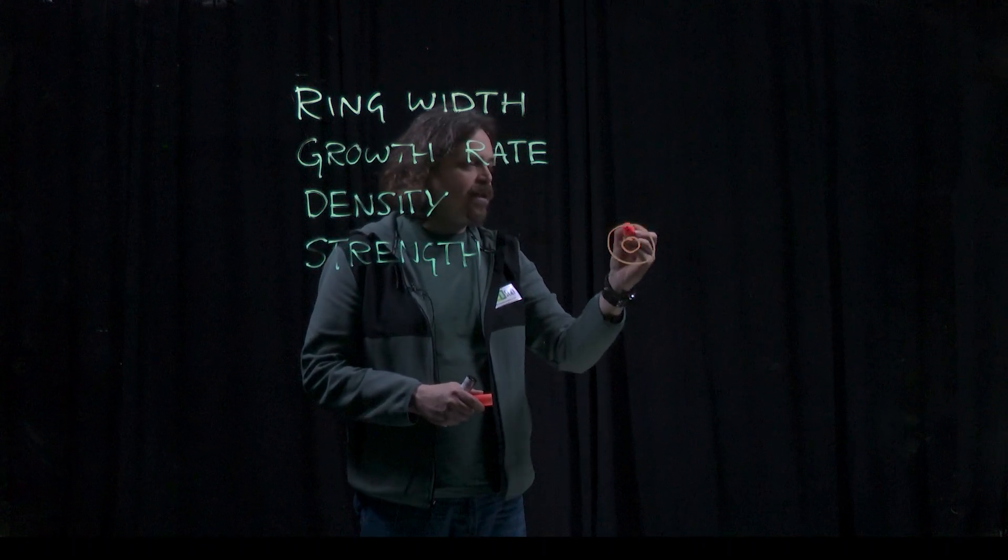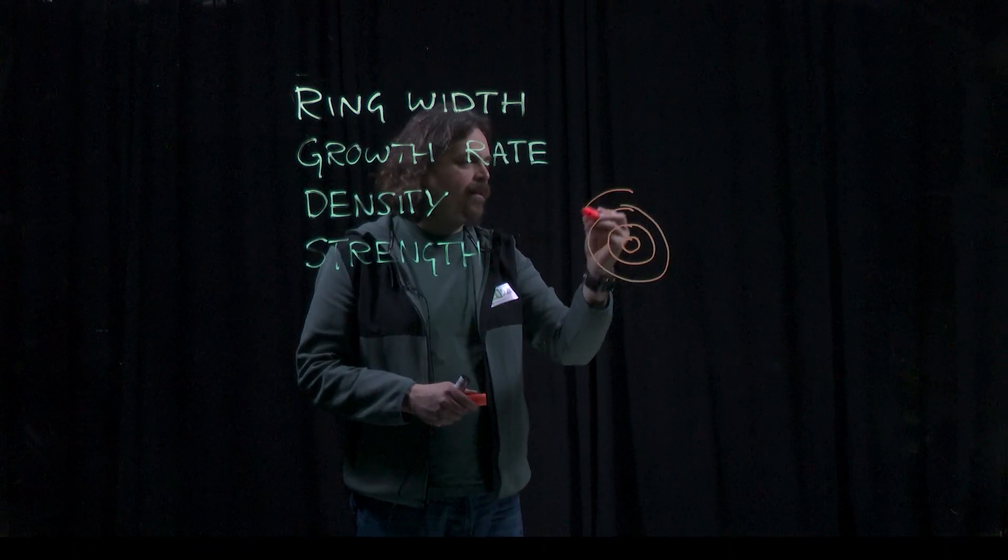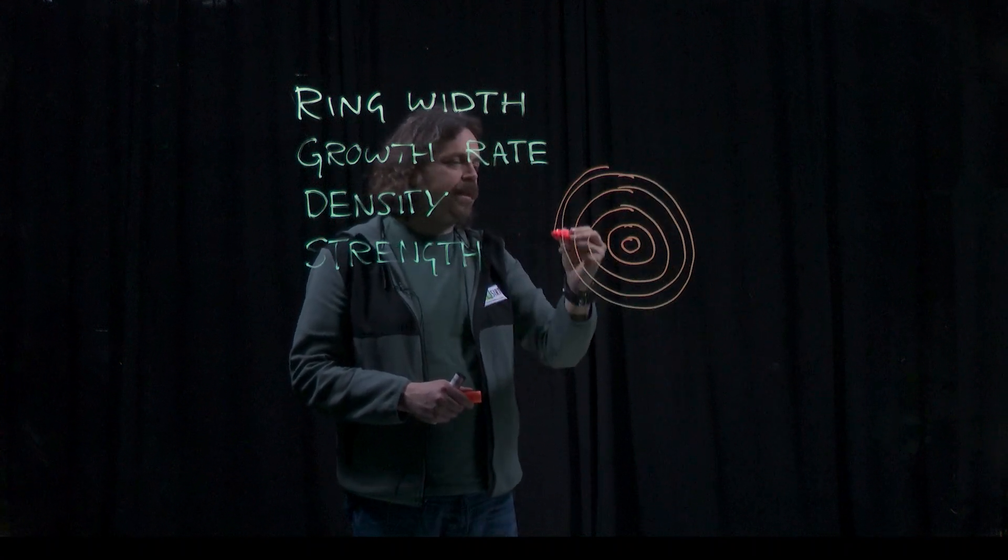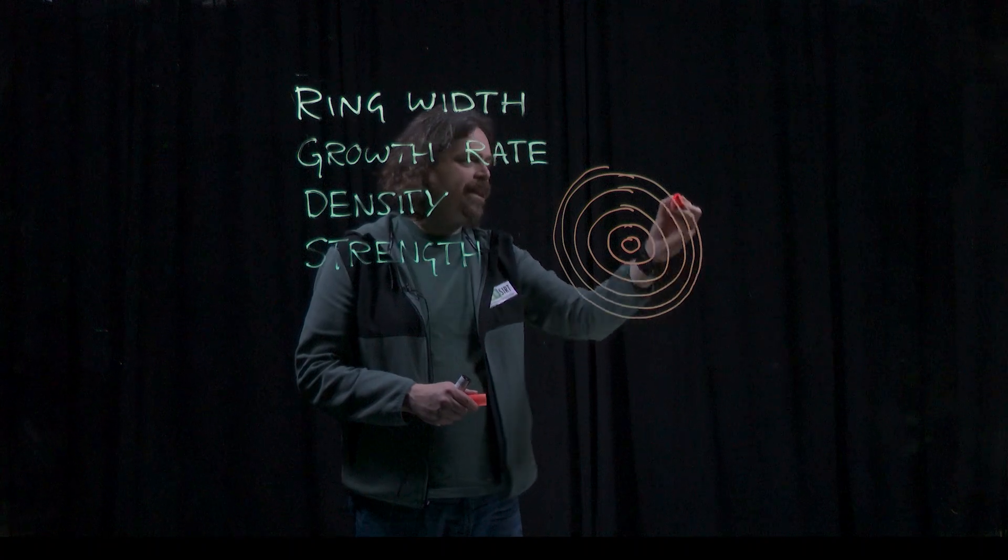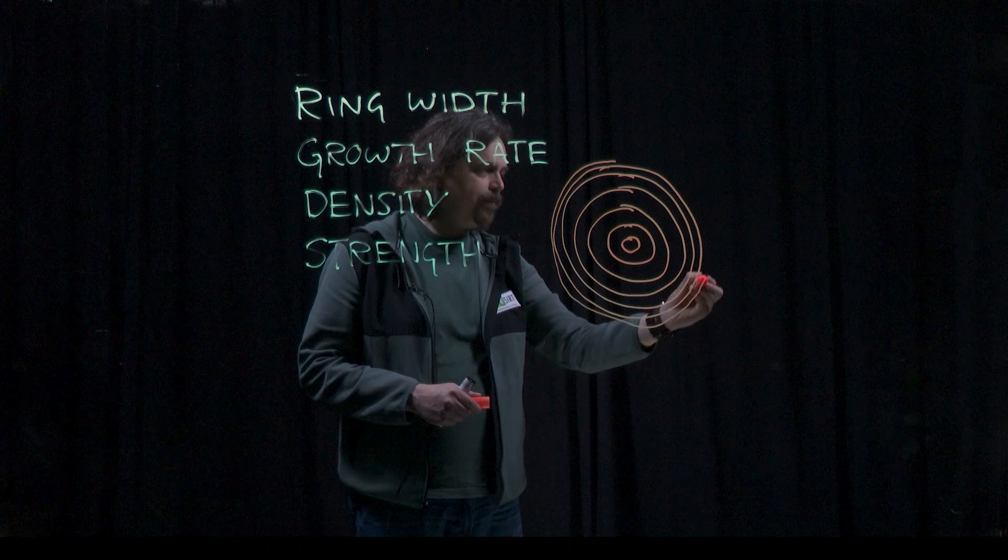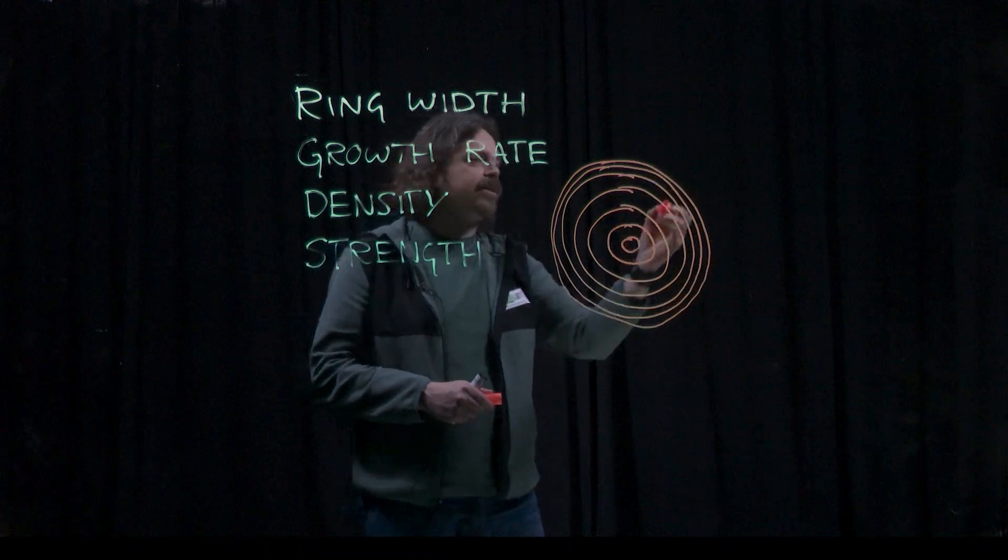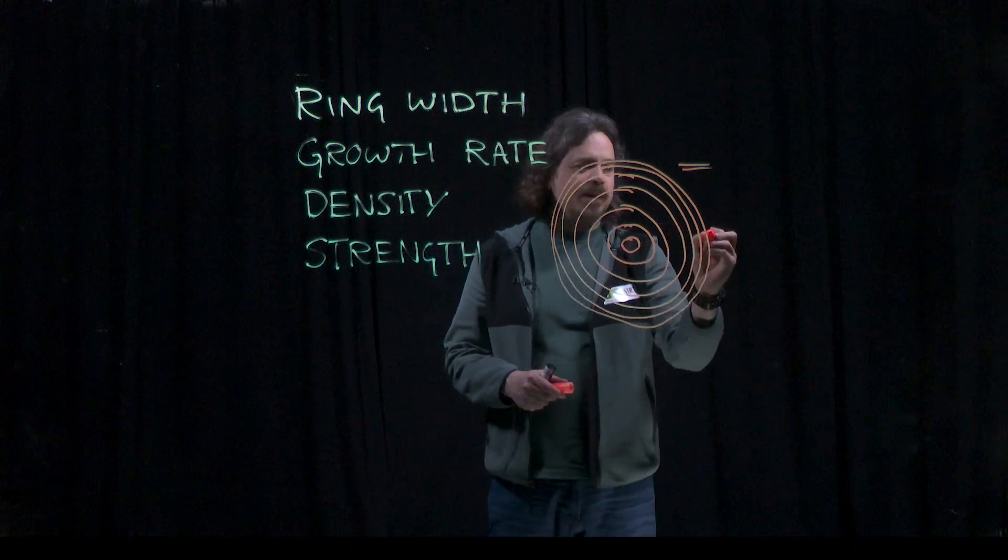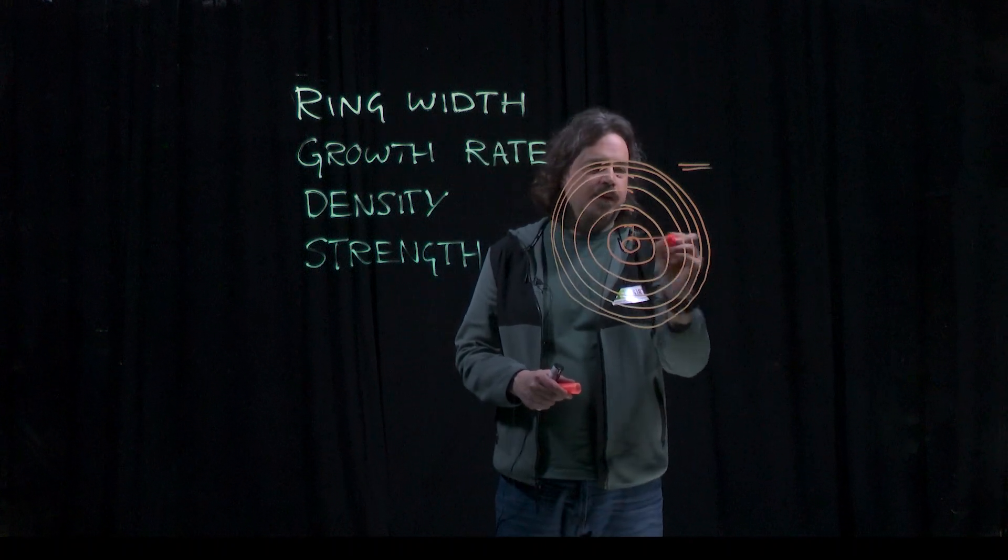So as a tree is growing it's producing rings. And generally speaking the bigger the tree gets the narrower the rings become. So here on the outside of the tree we have small rings and in the middle of the tree we have big rings.